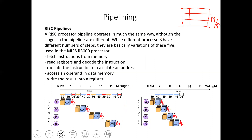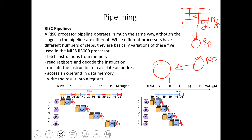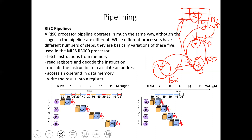Here is a concrete example. We have memory containing values X and Y. We have registers RA and RB, and an execution unit. From memory, X is loaded into register RA — this is the load instruction. Then we have the execute stage, followed by writing the result back through the connector register.